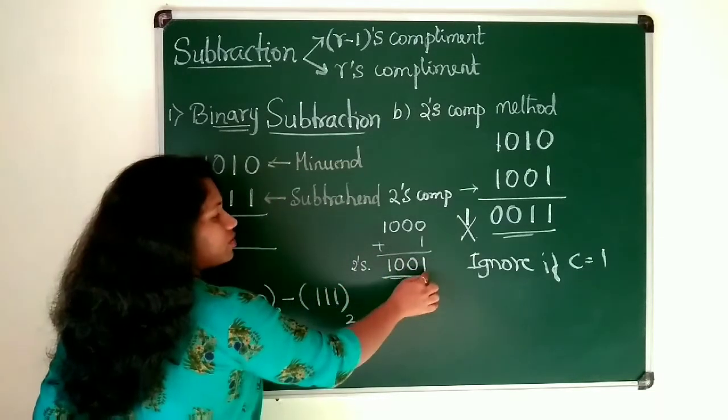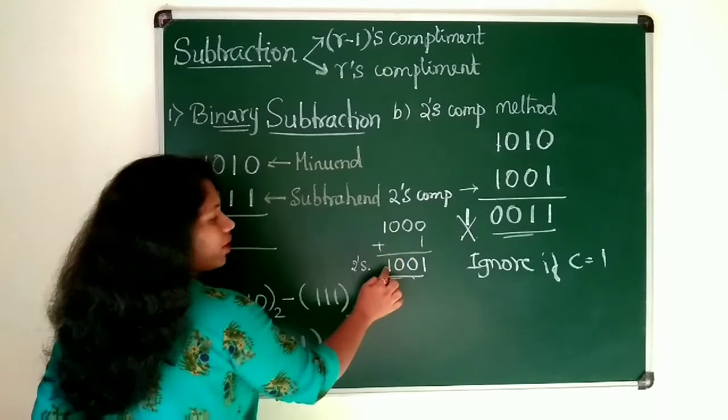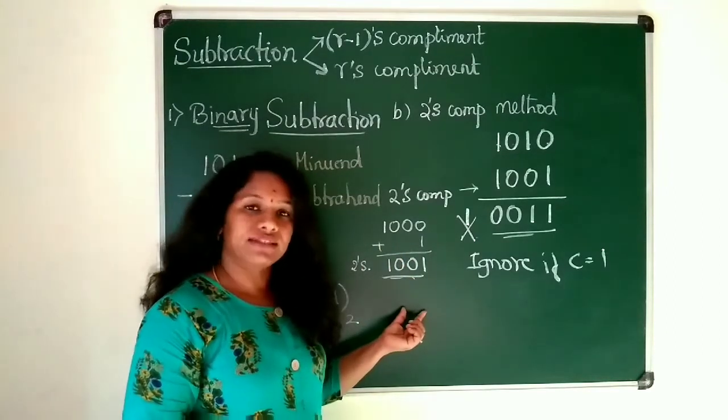Add 1 to it. 0 plus 1 is 1, 0, 0, 1. So this is what the 2's complement value of a subtrahend.